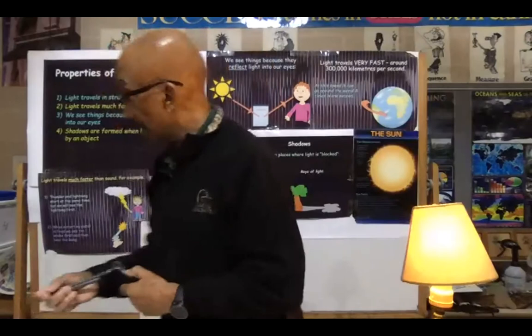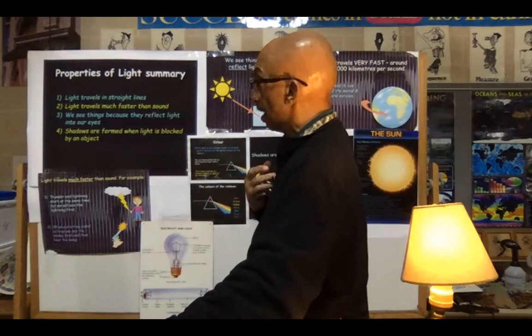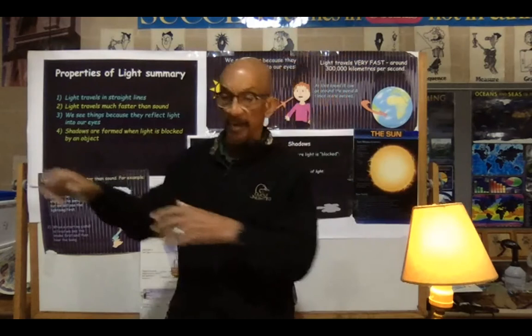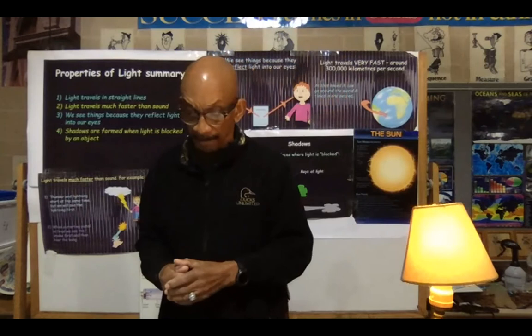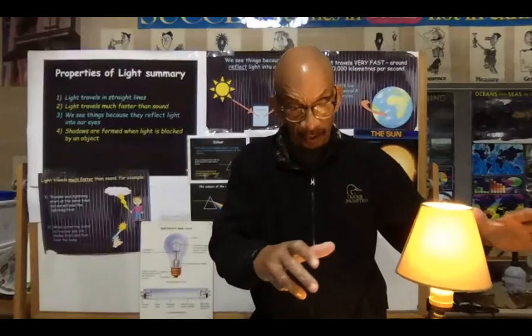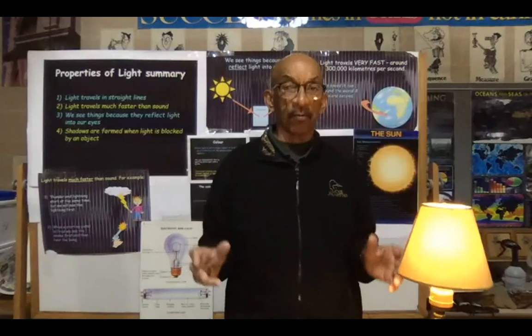Remember the properties of light: light travels in straight lines, light travels much faster than sound, we see things because they reflect light into our eyes, and shadows are formed when light is blocked by an object. If light can penetrate and go through a material, we say that material is transparent. If it slows some light rays but still lets some through — like this lampshade — that material is translucent. And something like a brick wall, which blocks all light, is opaque.